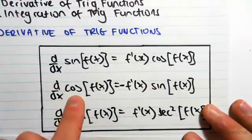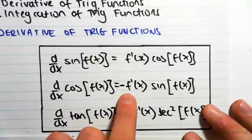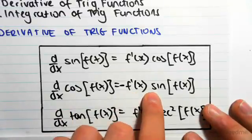When you differentiate cos f(x) with respect to x, you get minus f'(x) sin f(x).